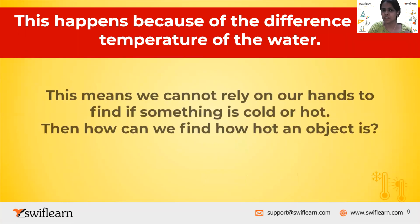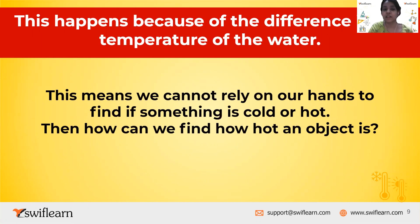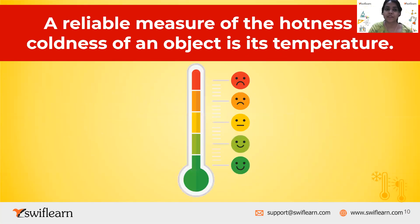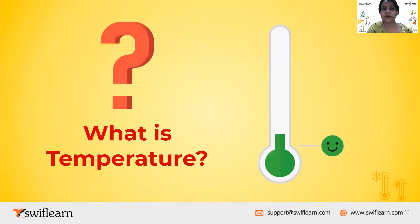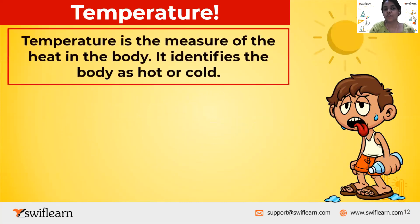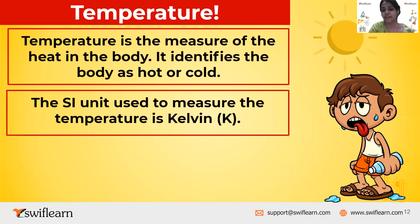What is temperature? This means we cannot rely on our hands to find if something is hot or cold. A reliable measure of hotness or coldness of an object is its temperature. Temperature is the measure of the heat in a body — it identifies the body as hot or cold. The SI unit for measuring temperature is Kelvin, denoted by the capital letter K.